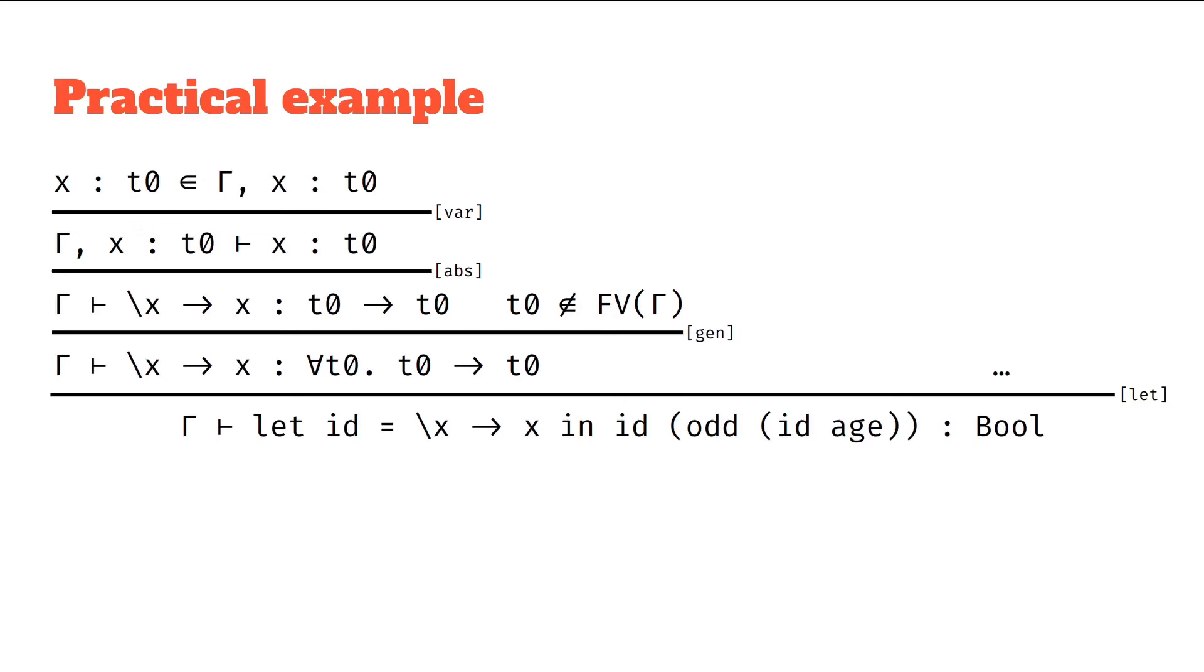Focusing in on how we did this, we used the generalization rule. So here at the left is where you have that normal monotype t0 to t0, we can work that out with the function abstraction and var rules, you can see on the top, and on the right hand side, t0 not being in the free variables of the context, and at this point the context is just our original context capital gamma, t0 isn't in that, and so we're okay to for-all quantify on the type of this expression.